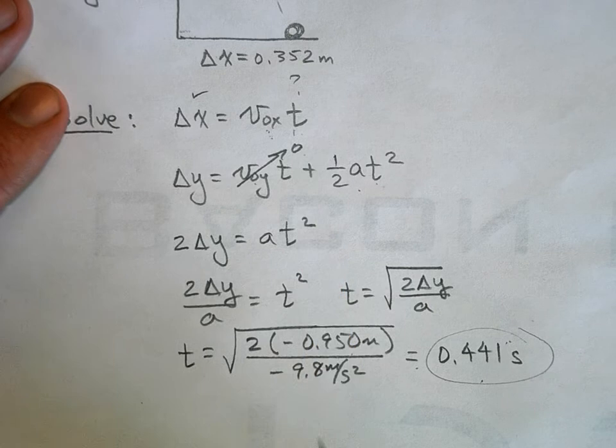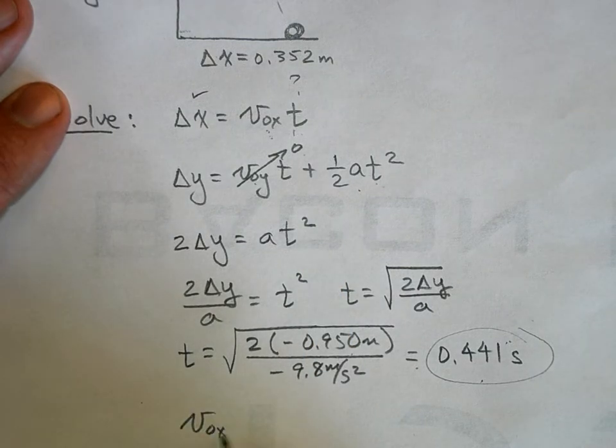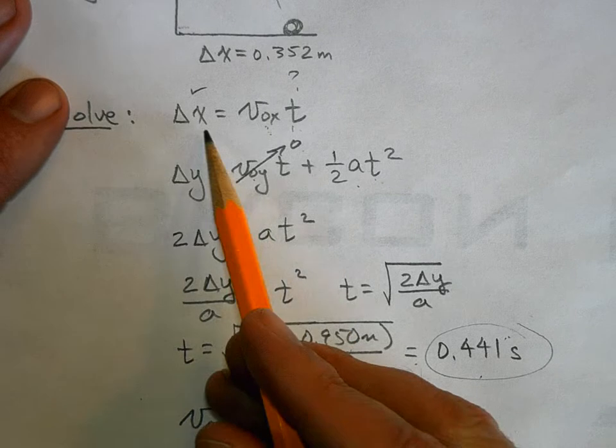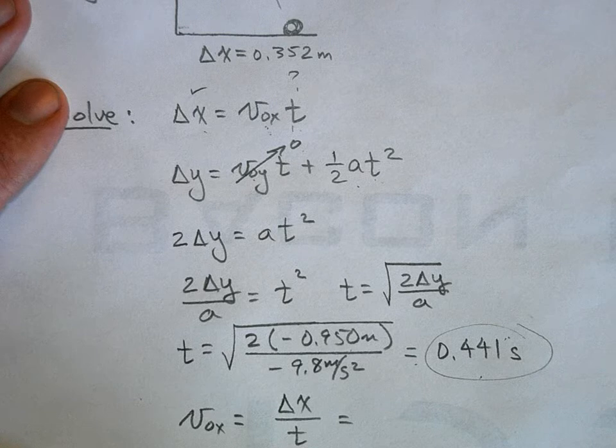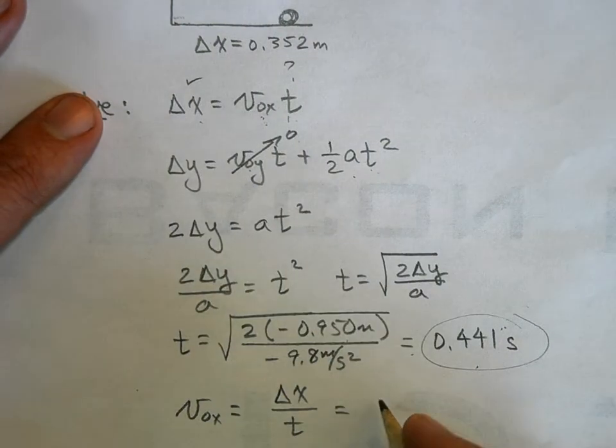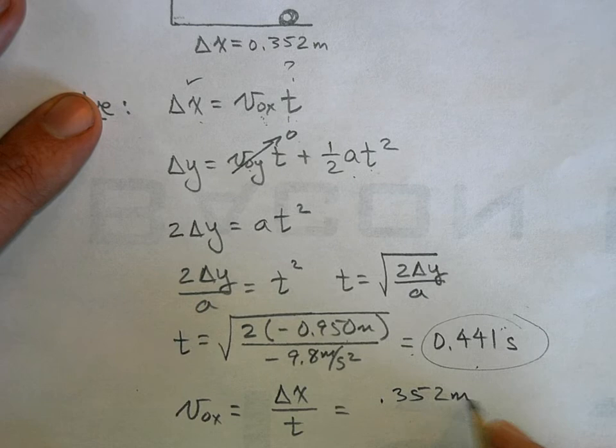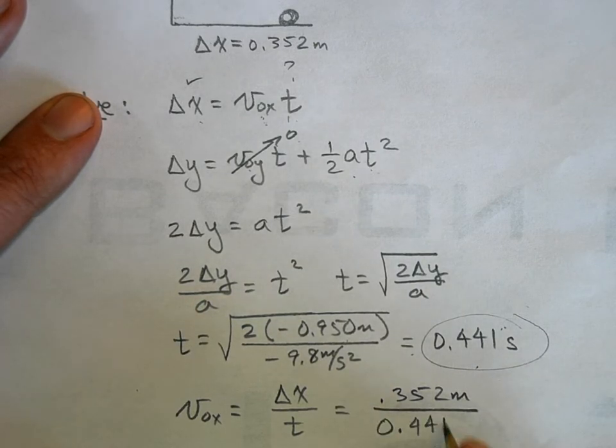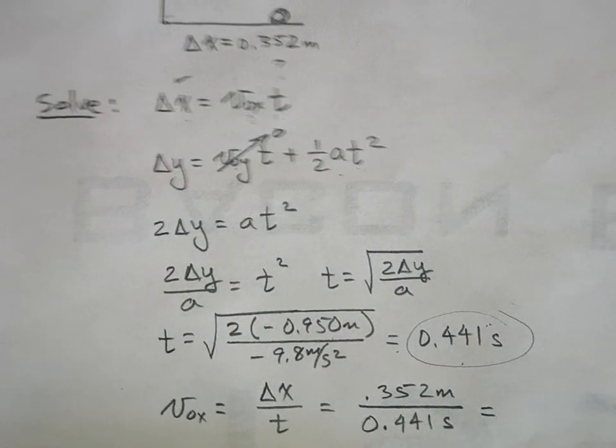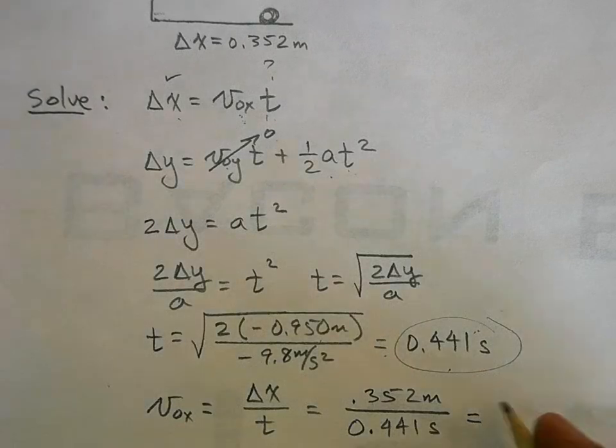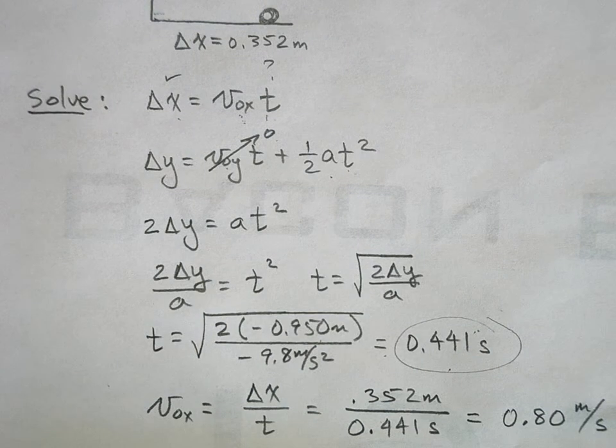So I now know the time that it took the ball to fall from here down to here, so I can now substitute in here. And so I'm going to say Vx is equal to Δx divided by t, really Δx over Δt, right? And this is 0.352 meters over 0.441 seconds, and this will give me an answer which should be 0.80 meters per second. Okay, I think that's correct. And that's your answer.